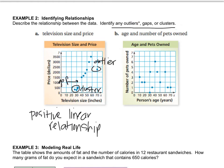For age and number of pets owned, the dots are all over the place — this is no correlation. That should make sense because how old you are doesn't correlate to how many pets you have. It's not like the older you get the more or fewer pets you have. There's no real relationship. I don't see any clusters, gaps, or outliers because the dots are just scattered everywhere.